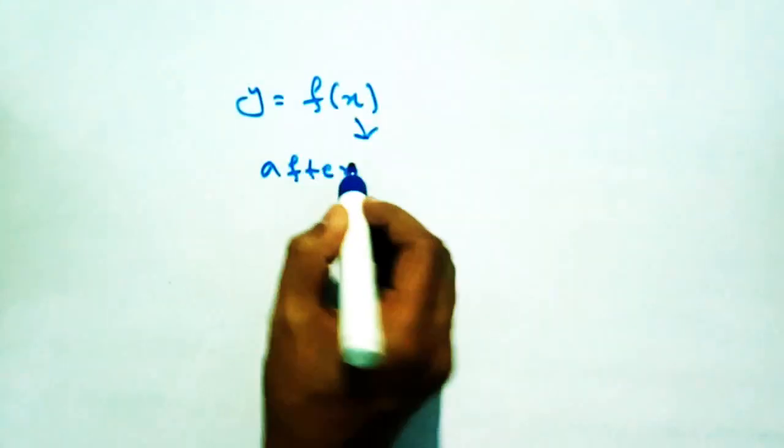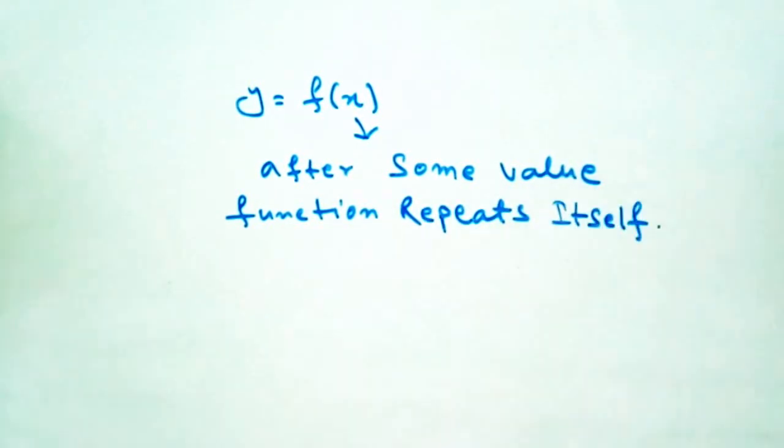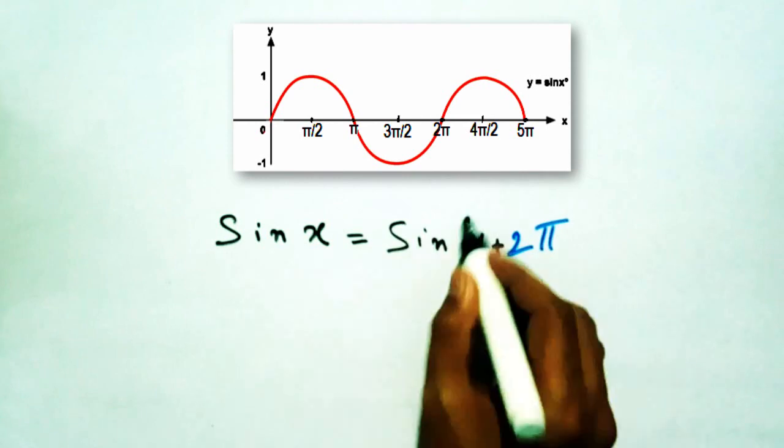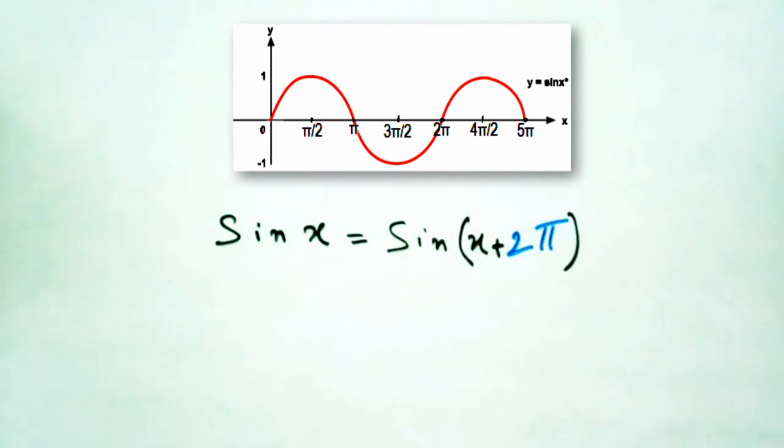Period of a function f(x) is the value of x after which the function repeats itself. For example, f(x) = sin x. In the graph of sin x, it is clearly seen that the function repeats itself at the interval of 2π.